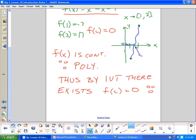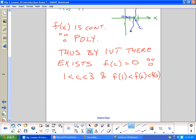because c is between 1 and 3 and f of c is between negative 7 and 17. And that can be zero. So f of c equals zero.